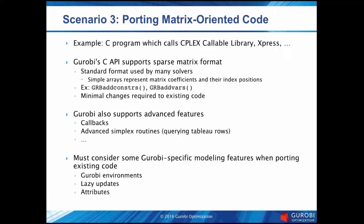Scenario three involves matrix-oriented code — for example, a C program calling CPLEX or Express. Gurobi's API supports sparse matrix format, which is the standard format used by many solvers. In this format, you have simple arrays representing matrix coefficients and their index positions. Gurobi supports compressed sparse row format with the GRBaddconstrs function and sparse column format with the GRBaddvars function. Gurobi also supports advanced features like callbacks and advanced simplex routines. I'd like to highlight some Gurobi-specific modeling features to keep in mind when porting existing code: Gurobi environments, lazy updates, and attributes.